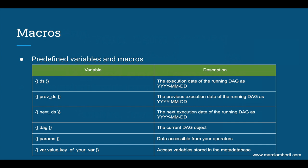Here is a non-exhaustive list of those macros and variables. ds gives you the execution date in the following format of your DAG, that can be used in SQL requests or bash scripts that need the execution date of your DAG.